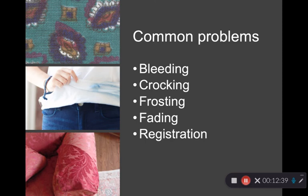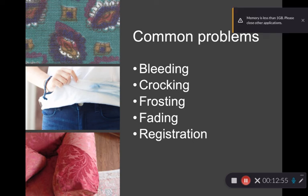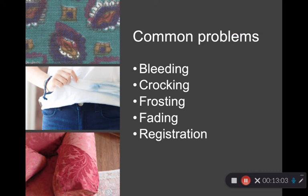Common problems seen with printing, dyeing, and color include bleeding, crocking, frosting, fading, and registration issues. Bleeding is a problem of color contact with water — when any dye or pigment is immersed in water, the dye can be released and picked up by other fabrics in the wash. Crocking is where, under abrasive circumstances, color abrades off onto other fabrics — this is especially an issue with interior fabrics and is why you see warnings on denim and indigo products, particularly when wet.